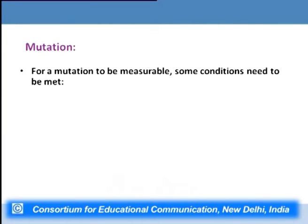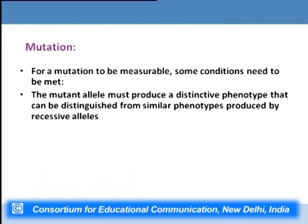For a mutation to be measurable, certain conditions must be met. First, the mutant allele must produce a distinctive phenotype that can be distinguished from phenotypes produced by the recessive allele. Unless a mutant allele forms a distinguishable phenotype we cannot determine whether that phenotype is due to a pre-existing or a new mutant allele. A distinct phenotype is required to determine whether a mutant allele has formed.